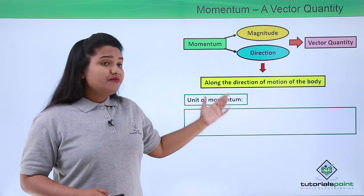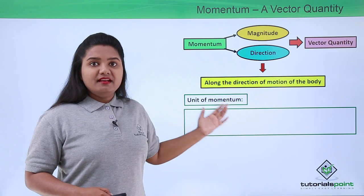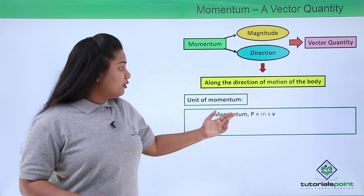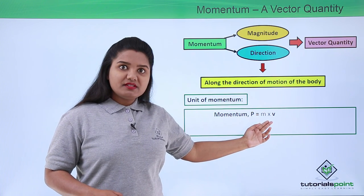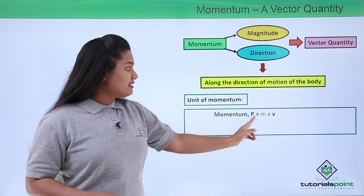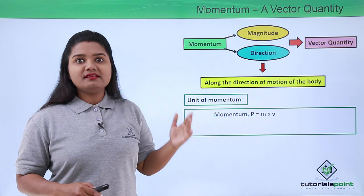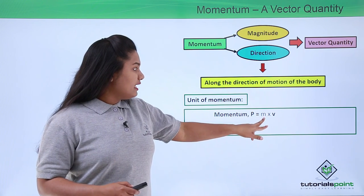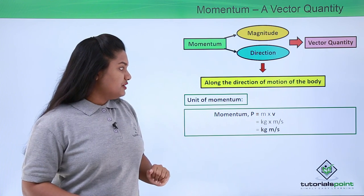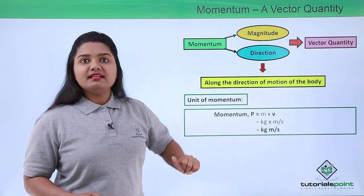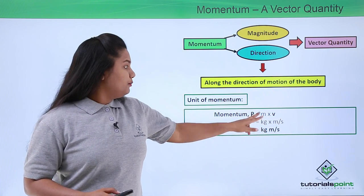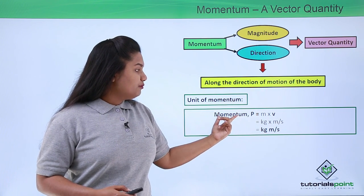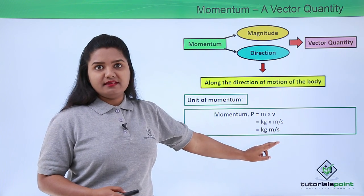Now let us figure out the unit in which momentum is measured. We know the formula for momentum is mass into velocity. The unit of mass is kg and the unit of velocity is meters per second, so putting these two units into the expression, we get the unit of momentum to be kg meters per second.